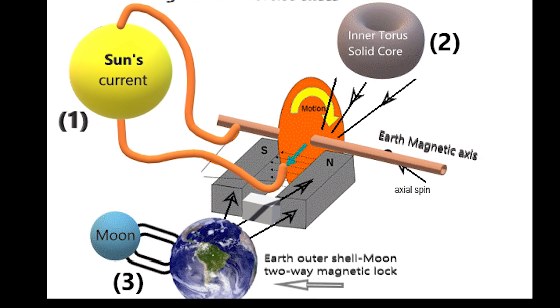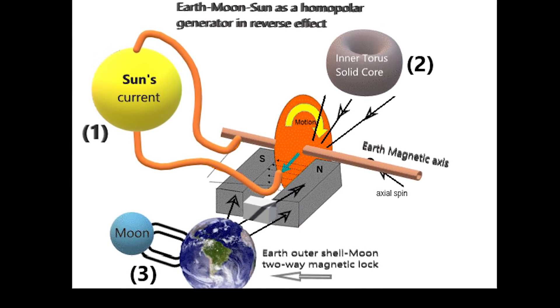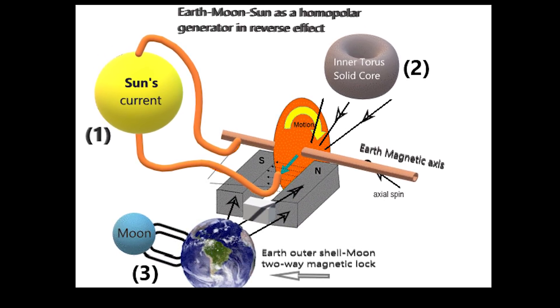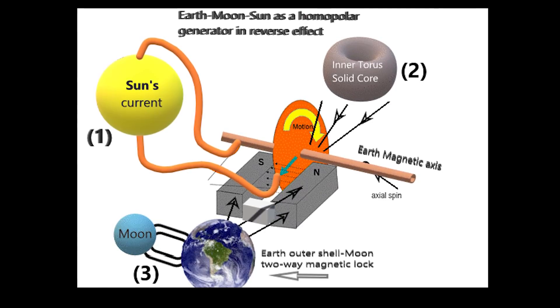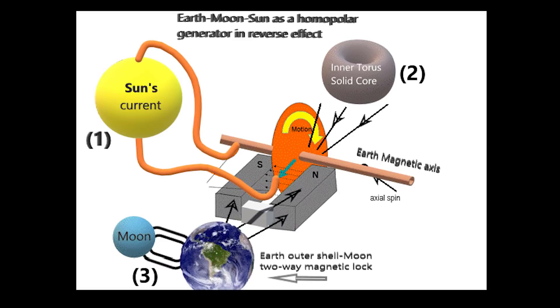In a planet scenario, the current from the Sun passing through the poles into the core, which is acting like the metallic conductive disk and the mantle and crust locked onto the moon acting like the solid electromagnet. This is what creates the spin force and magnetosphere.